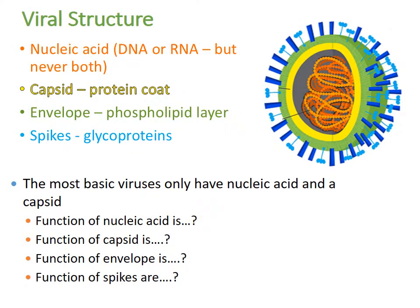When talking about a virus, the structure contains nucleic acid — either DNA or RNA, but not both. There's also a capsid, which is a protein coat around that nucleic acid. Then there's an envelope, which is the phospholipid layer. And then there are glycoprotein spikes — proteins with a little carbohydrate tail that make up that envelope.